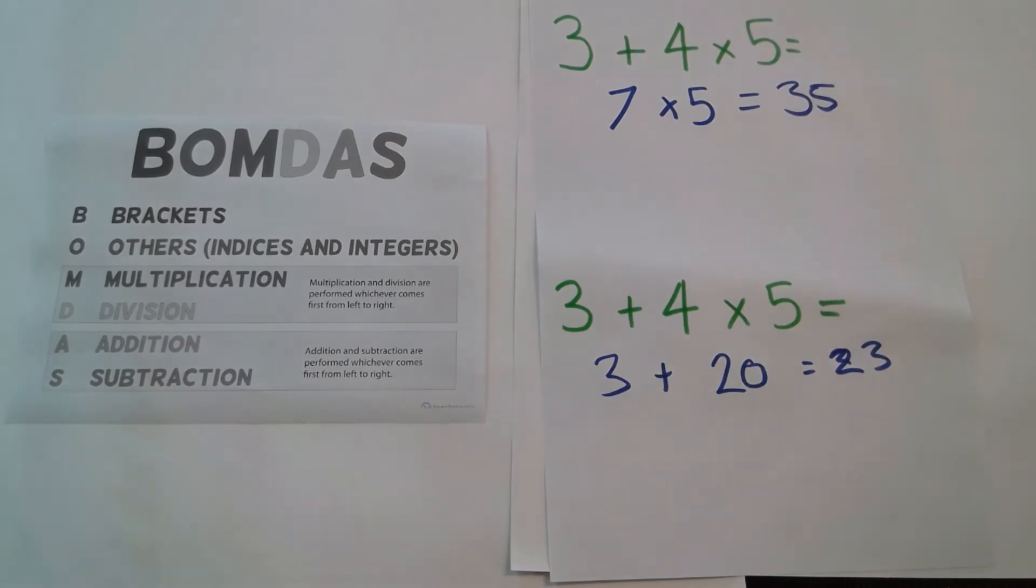And then I did addition, because we had no division. And I did 3 plus 20, which equals 23. So we followed the BOMDAS rules to make sure that we all have the same answer, because in math there's only one correct answer. Hope that helps.